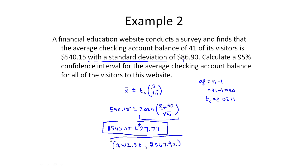So again, the way I could interpret this particular one is I would say that I'm 95% confident that the average checking account balance for all visitors of this website is somewhere between $512 and $568 would be a nice way to round that. So again, pay close attention to that idea of interpretation, but your final answer comes from this simple calculation, it's all about determining what procedure to use.